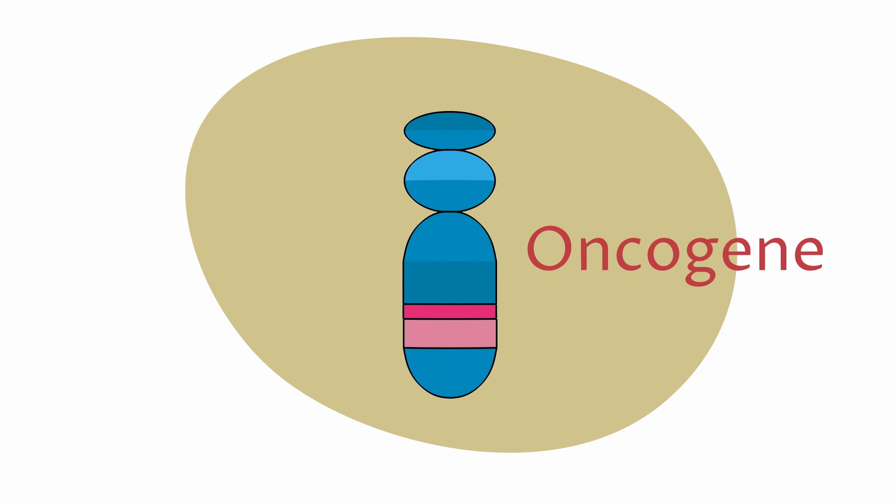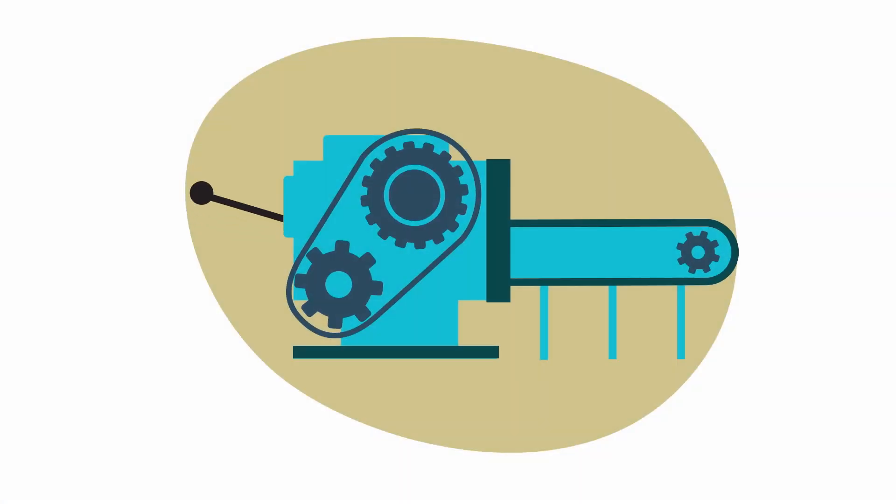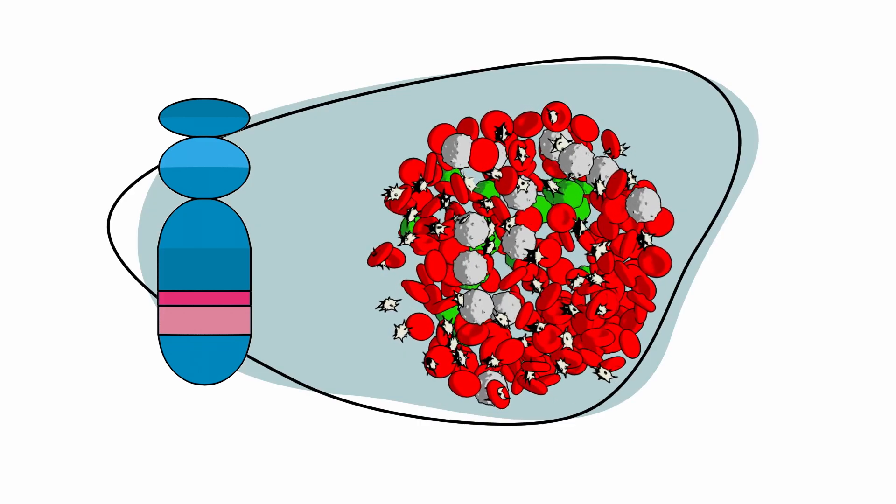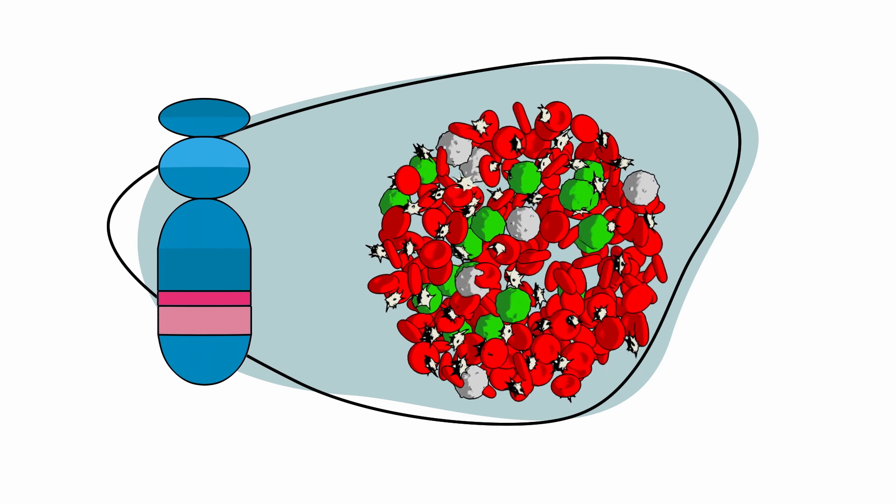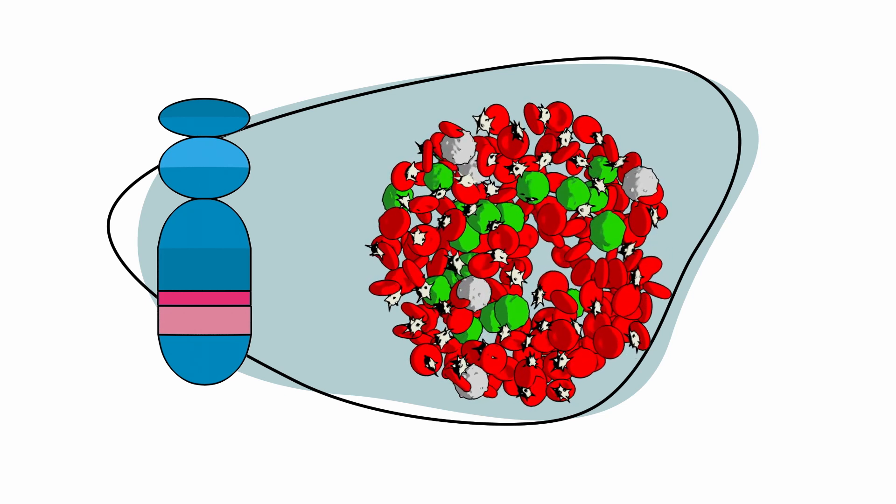BCR-ABL is known as an oncogene. Oncogenes can become permanently turned on or activated when they are not supposed to be, which can lead to cancer. The BCR-ABL gene does this by making an abnormal tyrosine kinase protein that signals CML cells to grow and multiply.